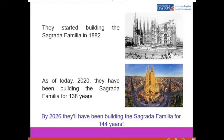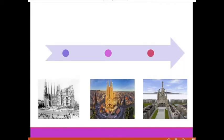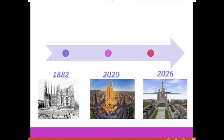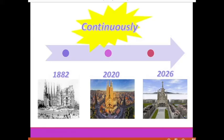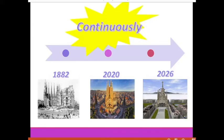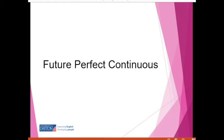From the beginning when construction started in 1882 until today, workers have been continuously working for over 130 years. The plan is to finish the church in the year 2026. All these years, workers have been working non-stop and continuously. To express this idea, we use a tense called the future perfect continuous.